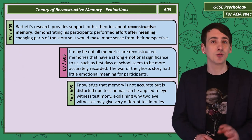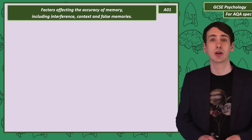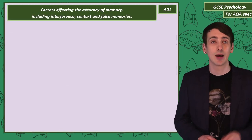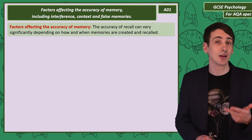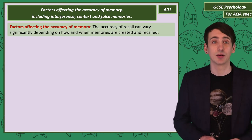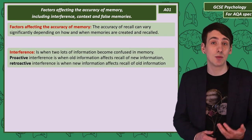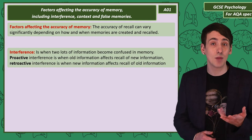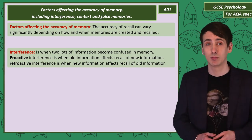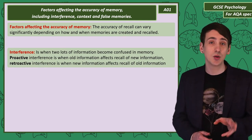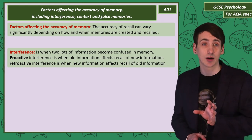Let's look at three factors that are thought to influence how correct your recall is: interference, context, and false memories. When we say interference, we mean there are two memories and one memory is making the recall of the other one more difficult. There are two types of interference: proactive and retroactive.